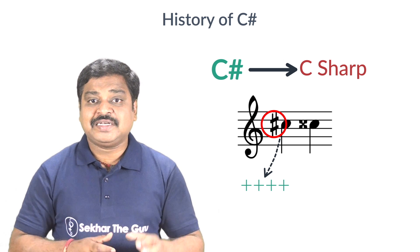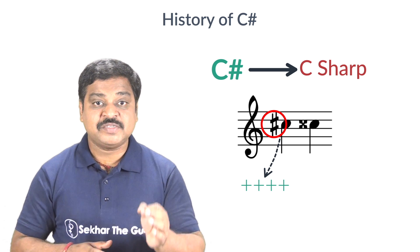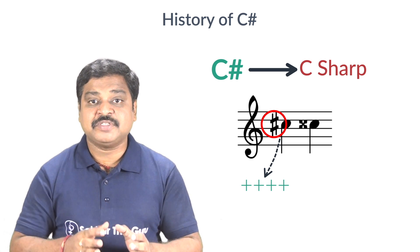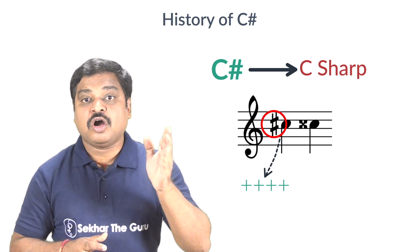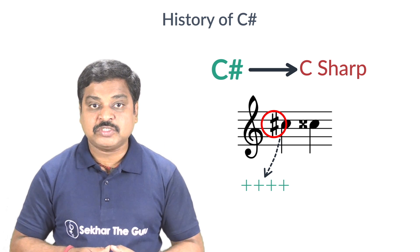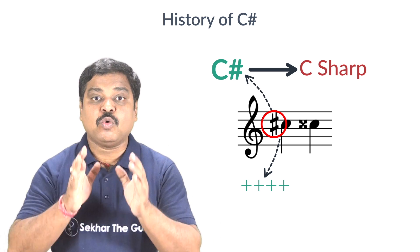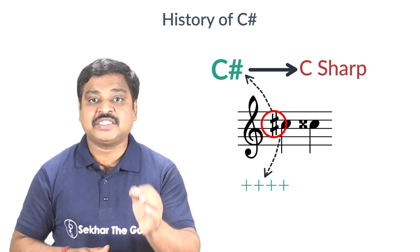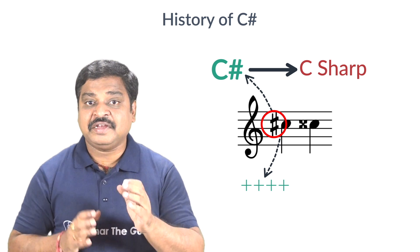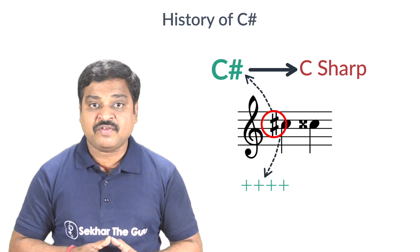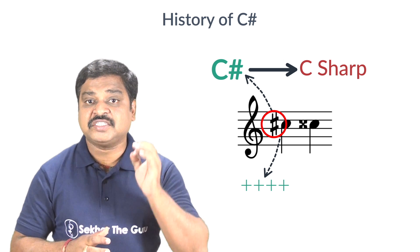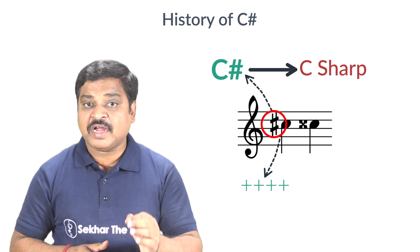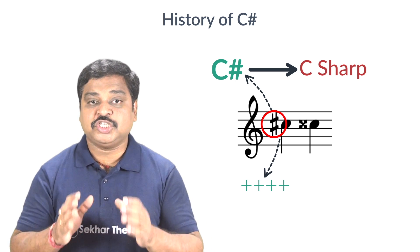Due to the technical limitations of display of standard fonts and the fact that the sharp symbol is not present on most keyboard layouts, the hash symbol was chosen to approximate the sharp symbol in the written name of the programming language, and hence we write C hash and pronounce it as C Sharp. Hope you have understood why the name C Sharp.